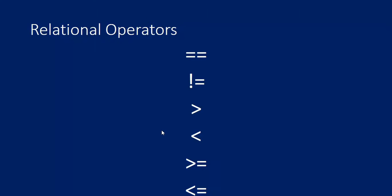Relational operators — I will show you a demonstration. Relational operators return in terms of true or false; basically they compare values. If two values are equal it returns true; if not equal it returns false. Say a greater than b — if a really is greater than b it will return true, otherwise it will return false.